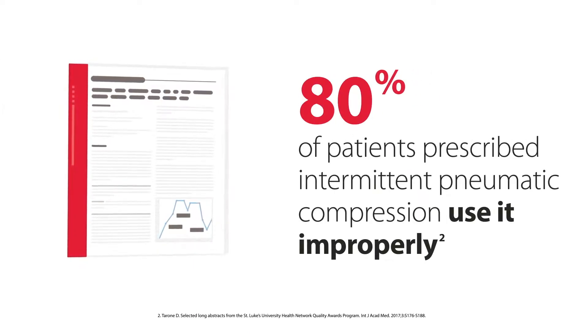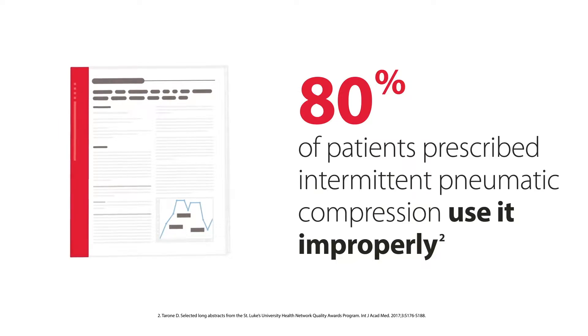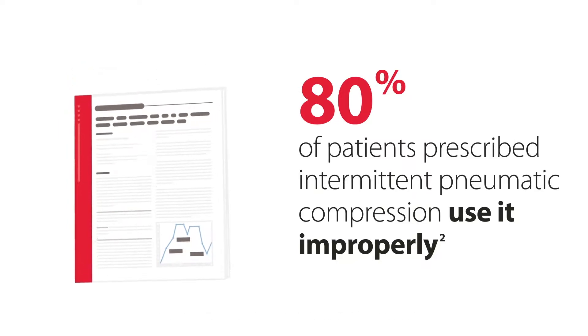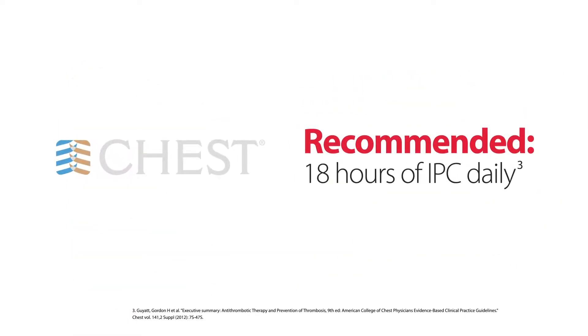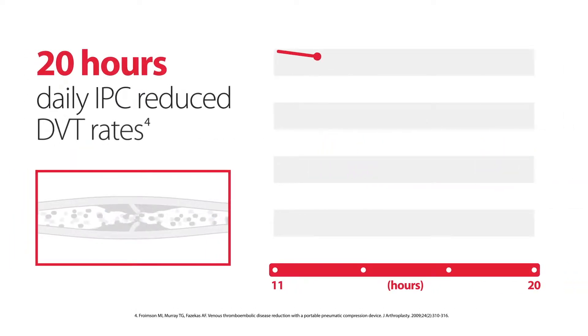A 2017 study found that 80% of patients prescribed intermittent pneumatic compression did not use it properly, despite chest guidelines that recommend 18 hours of IPC therapy a day. Other research suggests that when compliance rises from 11.8 to 20 hours of therapy a day, deep vein thrombosis rates dropped by 63%.